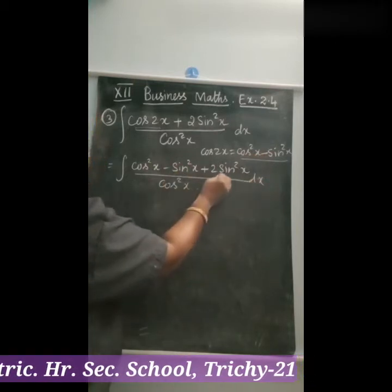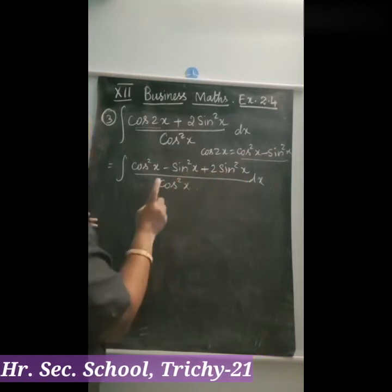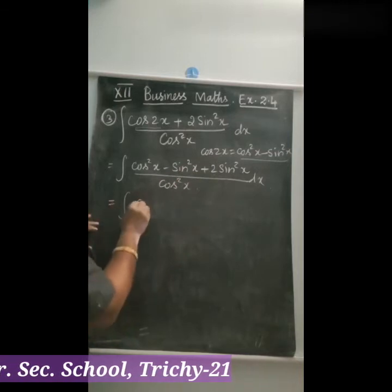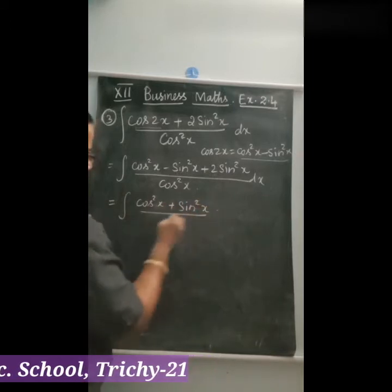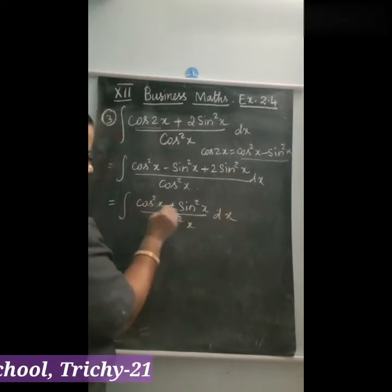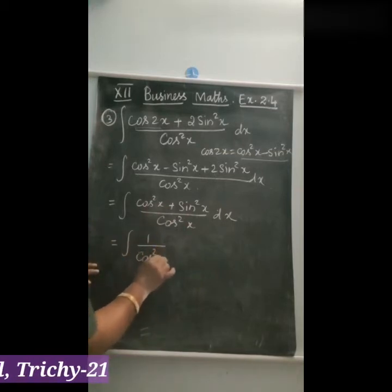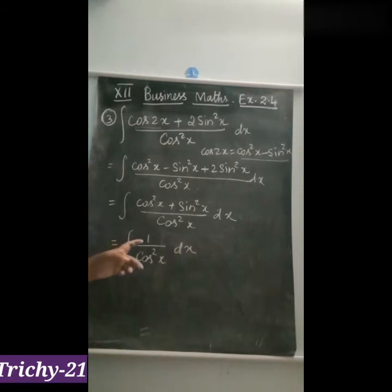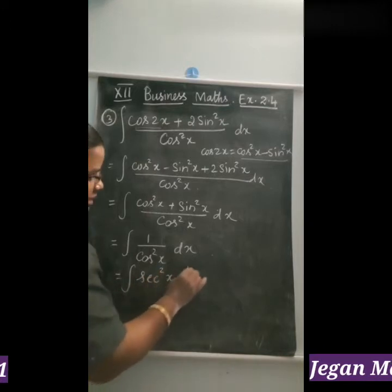Combining the sin²x terms: minus sin²x plus 2 sin²x equals plus sin²x. So the numerator becomes cos²x plus sin²x, which equals 1. The integral becomes 1 divided by cos²x dx, and since 1/cos²x equals sec²x, we integrate sec²x dx.